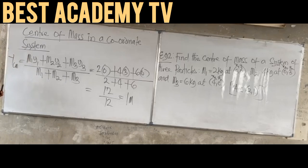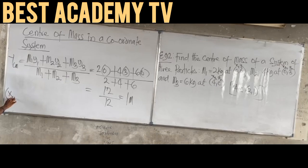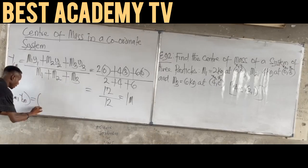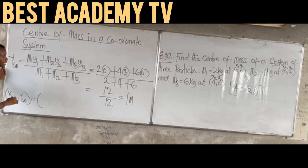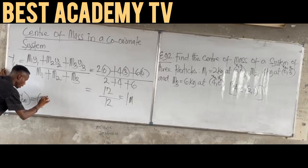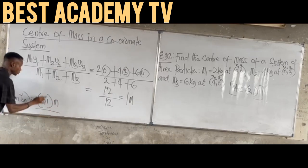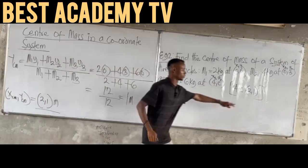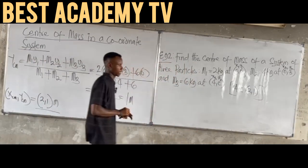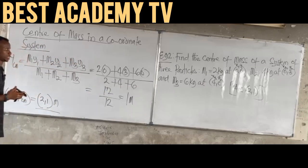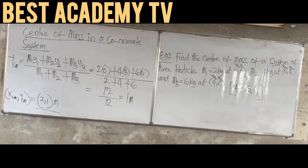So how do we represent our final answer? The center of mass in the coordinate system is written as (S_cm, Y_cm) equals (2, 1) in meters. That is our final answer. Please subscribe to the channel for more complex questions on this topic. Thank you so much.